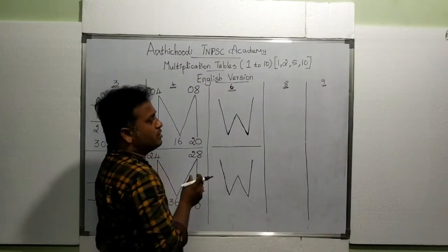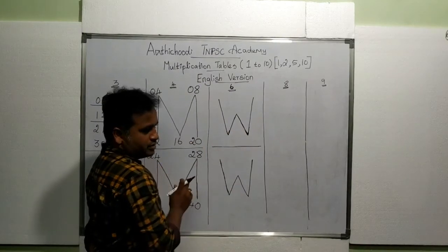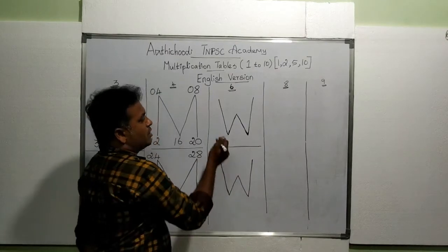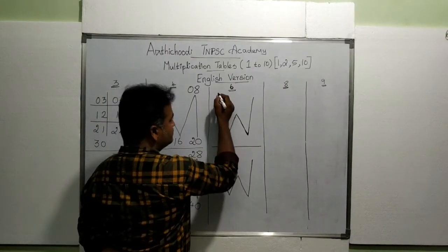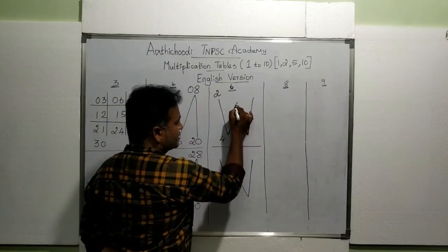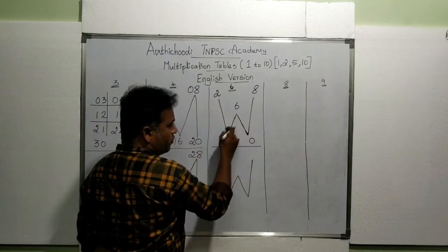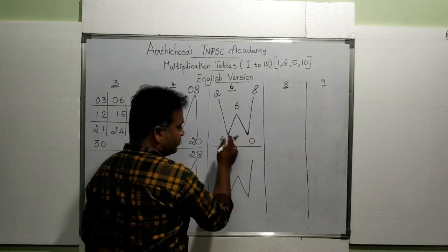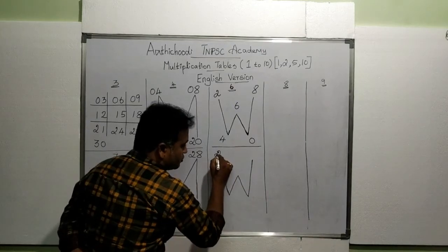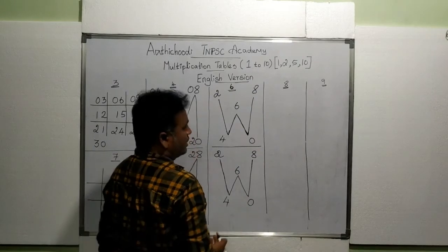Next we are going to write the sixth table. To write the sixth table, you write the letter W two times. Next, you need the even natural numbers — same as before: 2, 4, 6, 8, 0. The same set of numbers goes in this W also: 2, 4, 6, 8, 0.